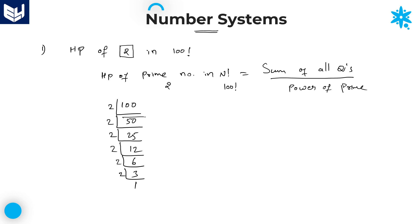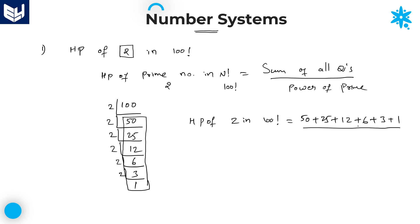Once the division process is done, you need to add all the quotient values. So the highest power of 2 in 100 factorial is equal to the sum of all the quotients: 50 plus 25 plus 12 plus 6 plus 3 plus 1, divided by the power of the prime number. Here, the prime number is 2 and its power value is 1, so the denominator value is 1. Adding all the values: 50 plus 25 is 75, plus 12 is 87, plus 6 is 93, plus 3 is 96, plus 1 is 97. Therefore, the highest power of 2 in 100 factorial is equal to 97.